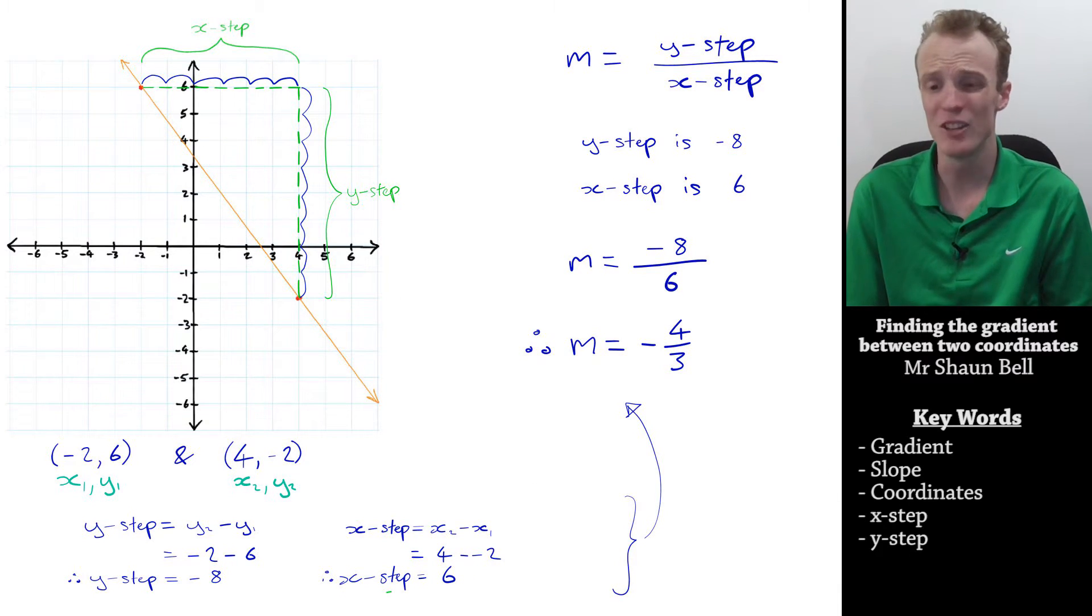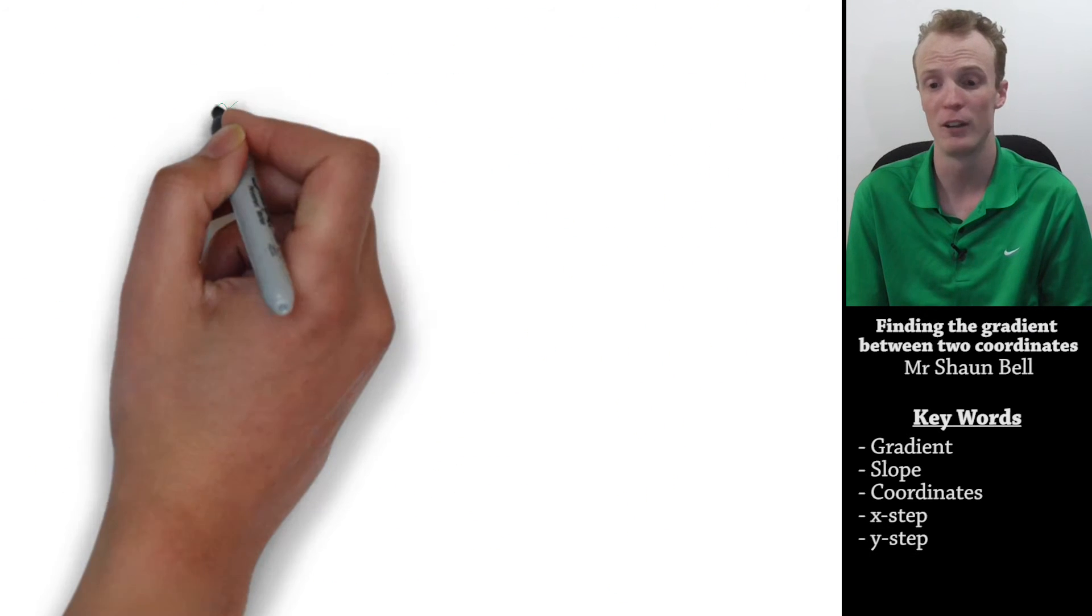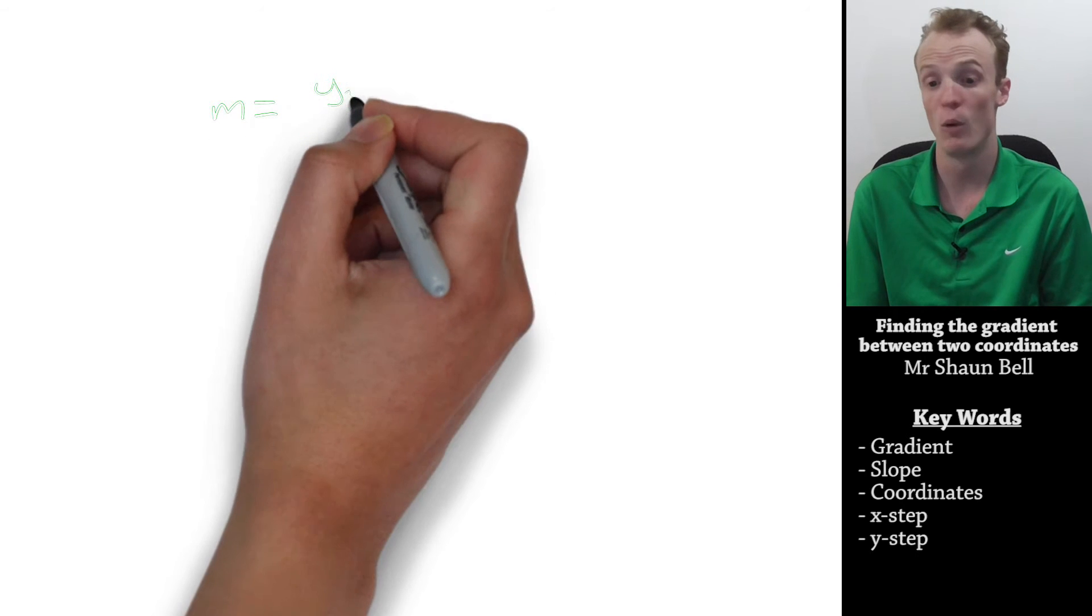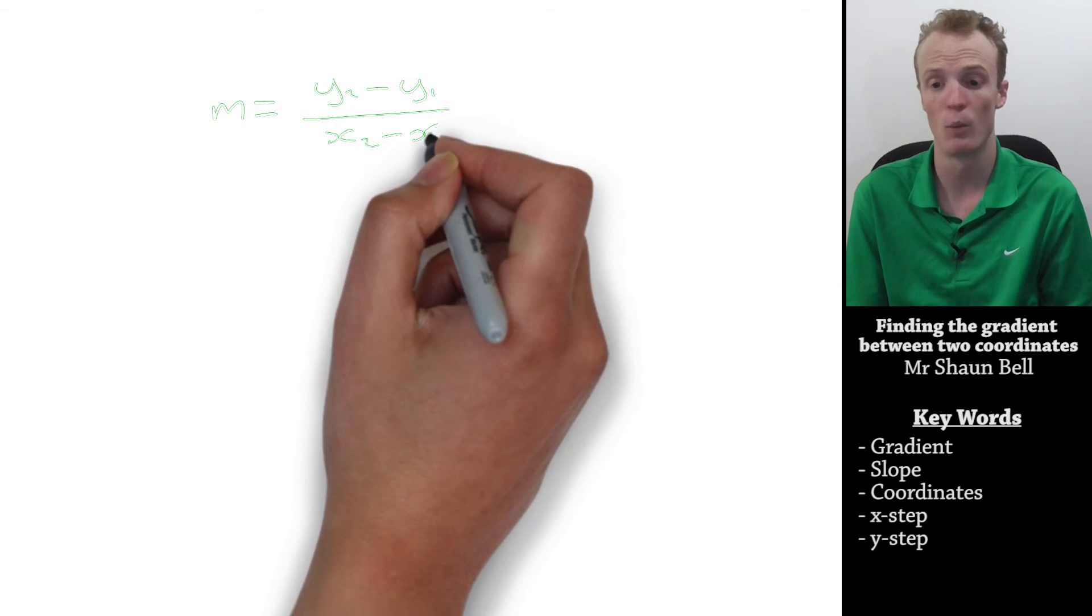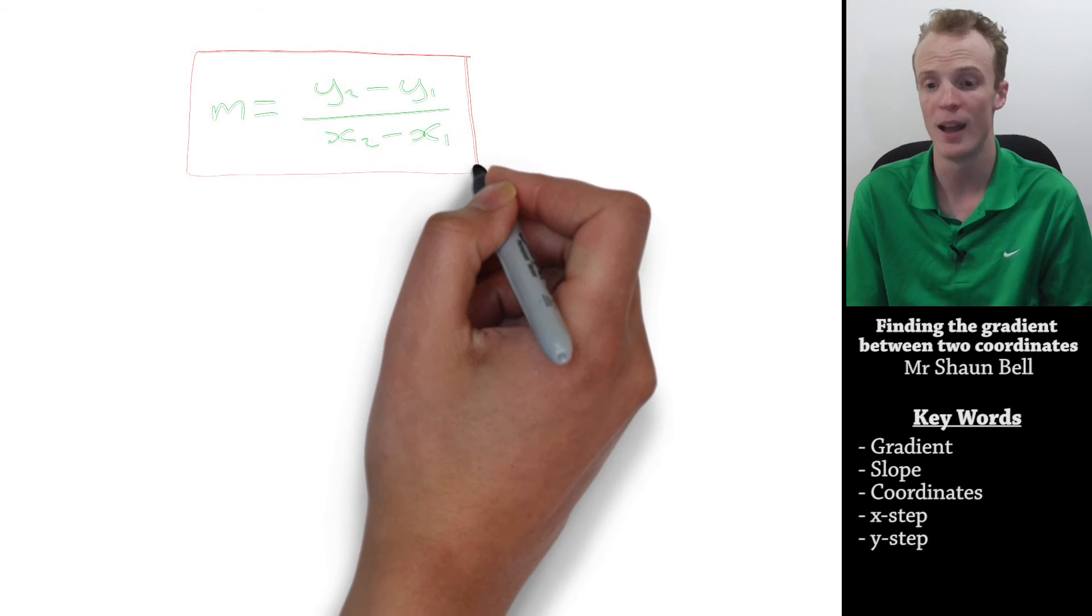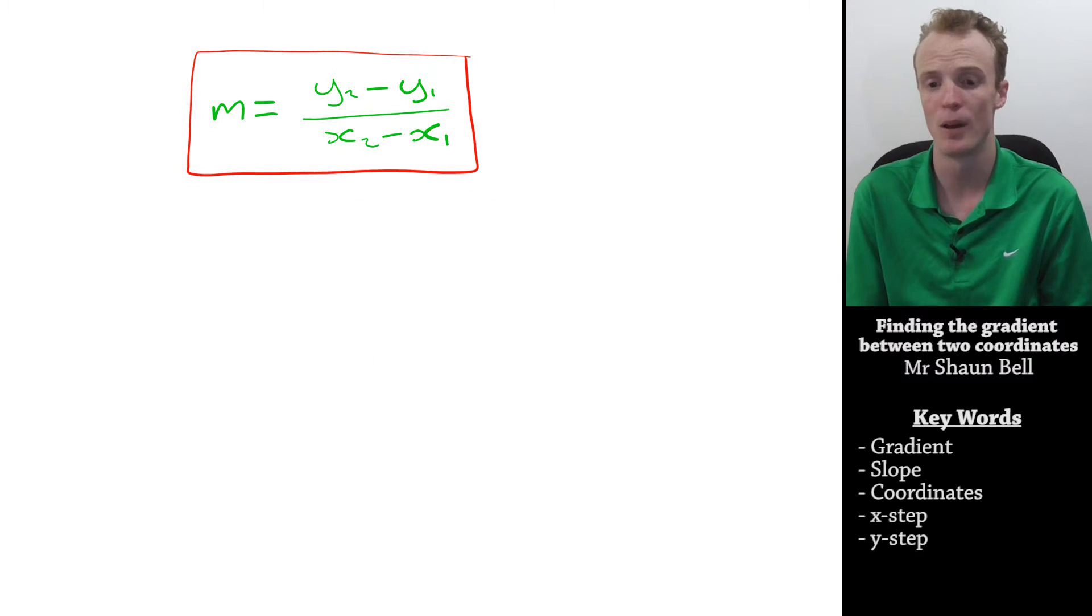So, essentially, what we've actually found ourselves is a shorter way to find the gradient, where the gradient, or m, is equal to y2 subtract y1, all divided by x2 subtract x1.